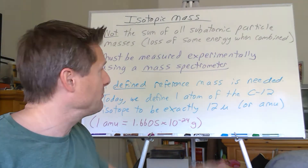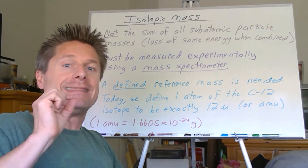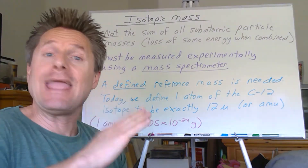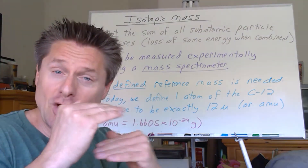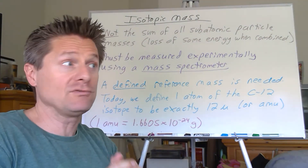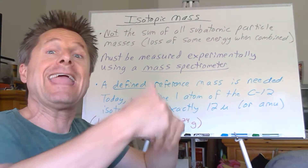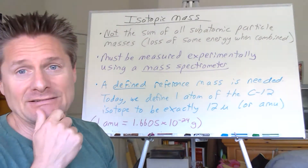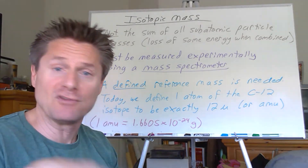So 12 atomic mass units is defined as the mass of a single carbon-12 atom. What we do is put that known atom in a foot race with any other isotope in the mass spectrometer, measure the ratio of their masses, and since we know the mass of carbon-12, we can calculate the isotopic mass of the other isotope. We can do this for all known isotopes, and there are tables of these values.